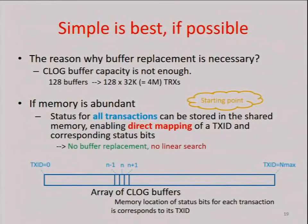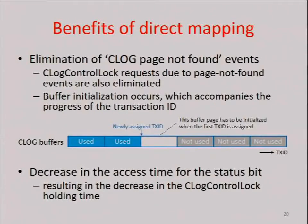This slide shows the basic idea of C-Log management proposed in this talk. It is very simple: the abolition of C-Log page replacement. Since the number of transactions is finite, the memory for C-Log is also finite. The idea is that the status bits for all transactions are stored in shared memory. This solution is possible if memory is abundant. Both overheads can be eliminated — C-Log page-not-found events do not occur, and linear search is no longer necessary because the memory location of a transaction directly corresponds to its transaction ID. I call this C-Log direct mapping.